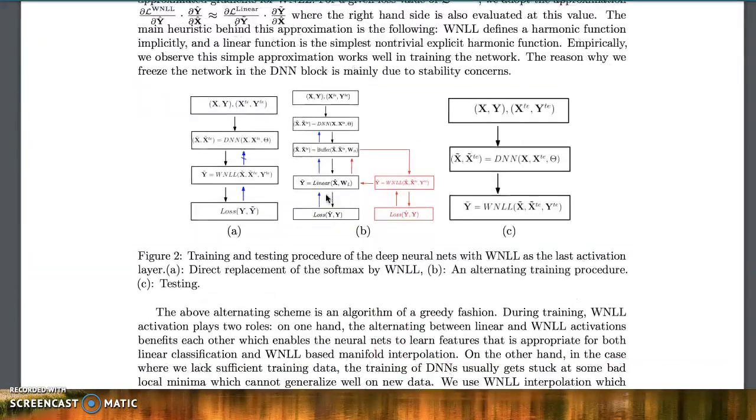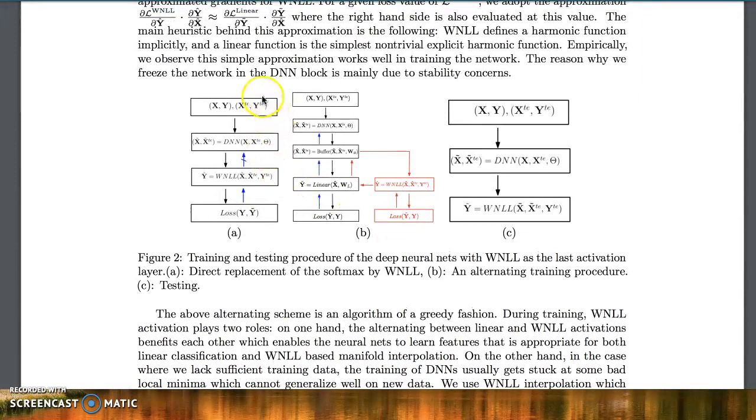So our architecture is the following. Instead of directly passing through the network, we use template data along with its labels x-template and y-template, feed it through the network, and generate the prediction by interpolating the deep features x tilde on x tilde template and y tilde template.